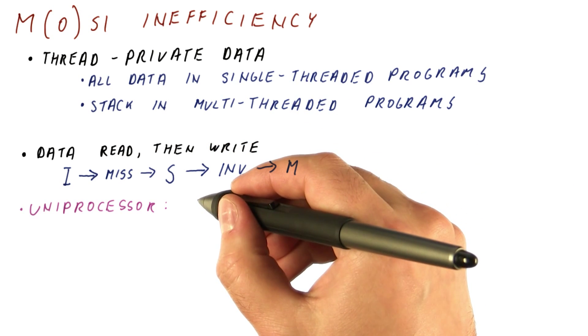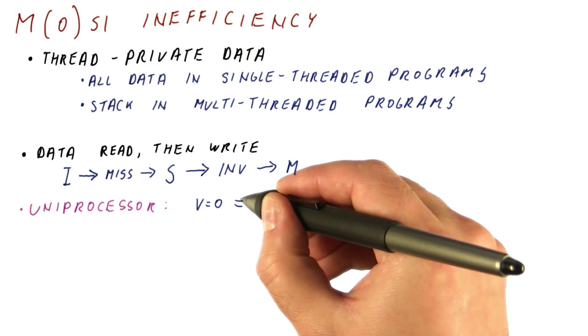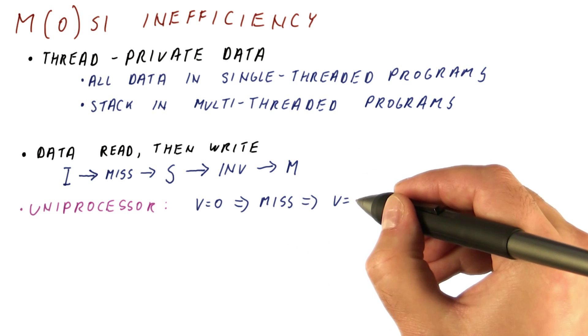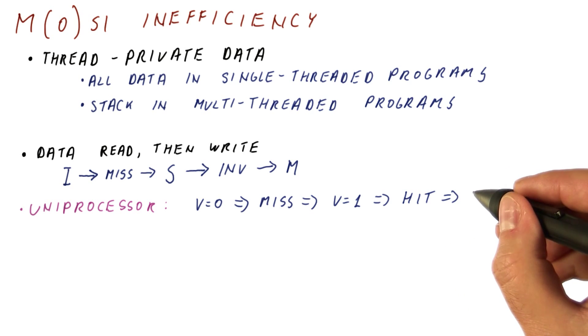In contrast, if we had a uniprocessor, the block would have a valid bit of zero. We read it, we have a miss, now the valid bit becomes one. Then we have a hit when we write it, and we just change the dirty bit to one.